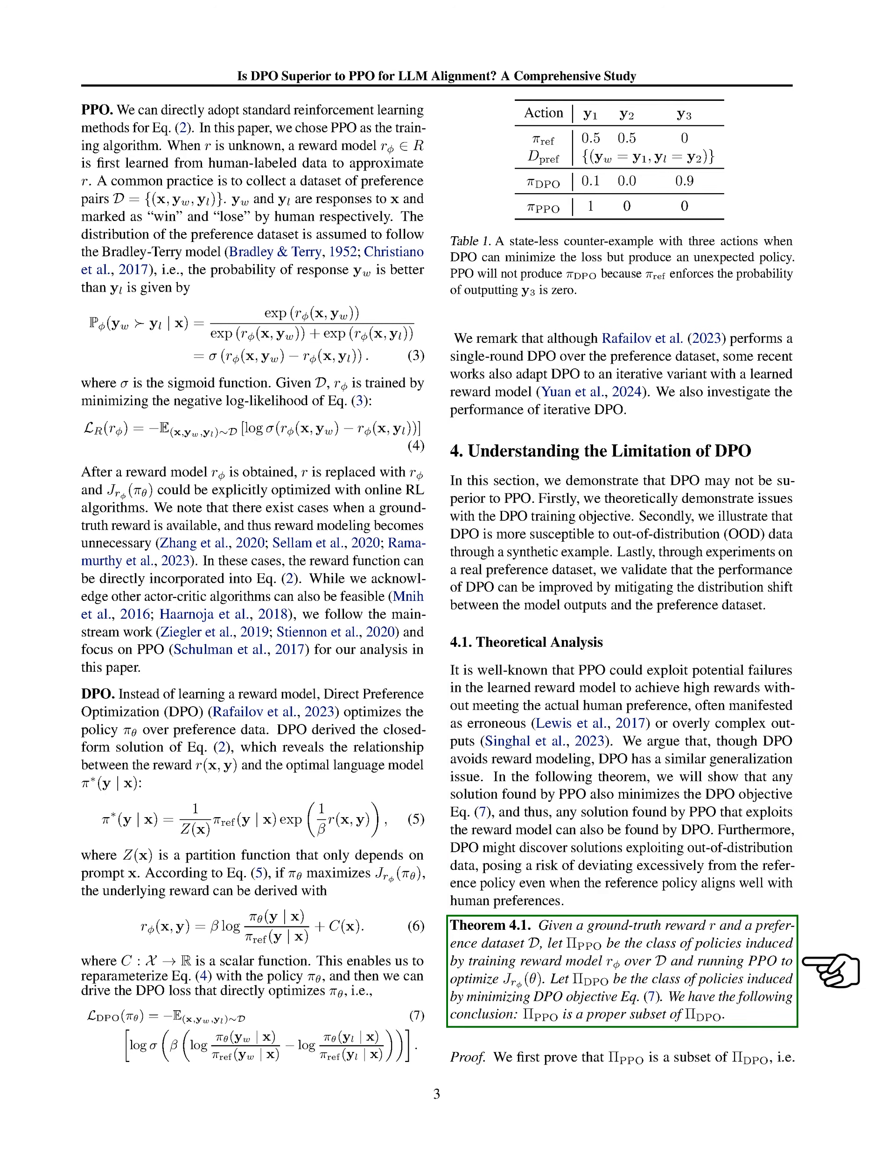leading to significant deviations from the reference policy even when the reference policy aligns well with human preferences. We will demonstrate that the class of policies induced by training the reward model and running PPO is a subset of the class of policies induced by minimizing the DPO objective.